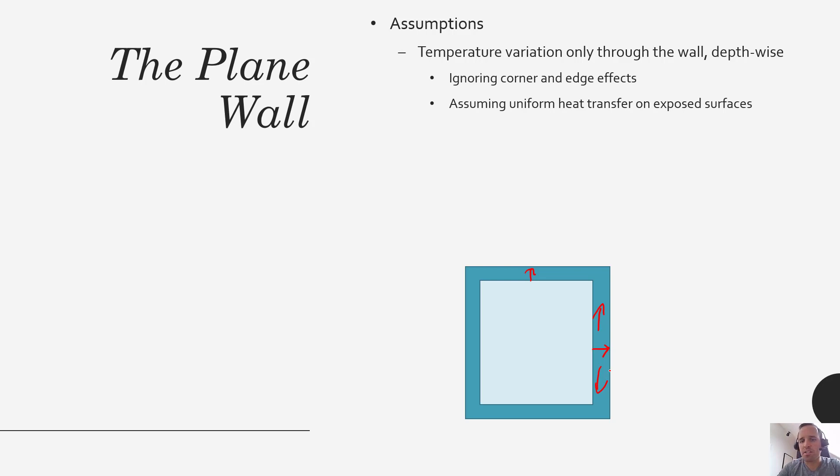So one of the assumptions that we made, what this implies is that we are ignoring what may be happening on the corners. For example, if this is a house, a flat-roofed house, you may have sunlight hitting here. You may also have a different material here than you would have on the walls. So we could certainly treat this as a plane wall and this as a different type of plane wall.